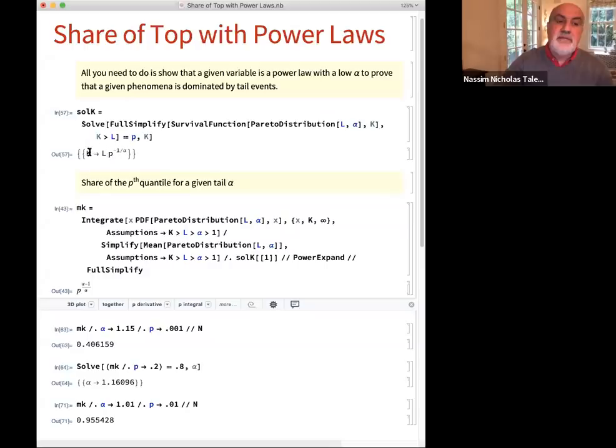And you can pull K where survival function means probability of exceeding with a given parameterization with L and alpha. L of course this will disappear from the equation we'll see, and K is the threshold.